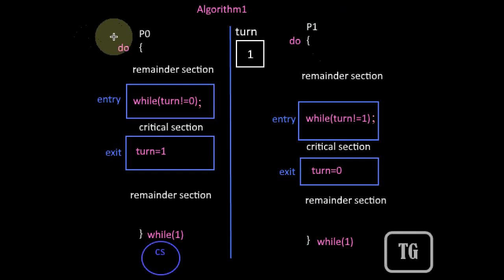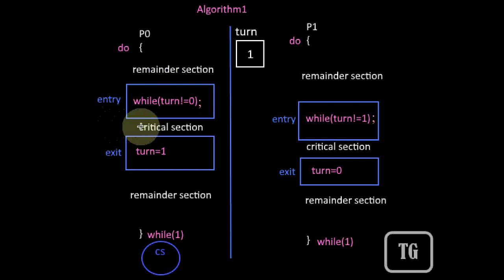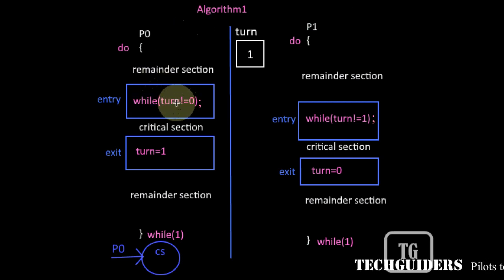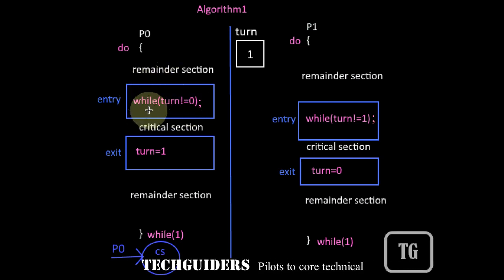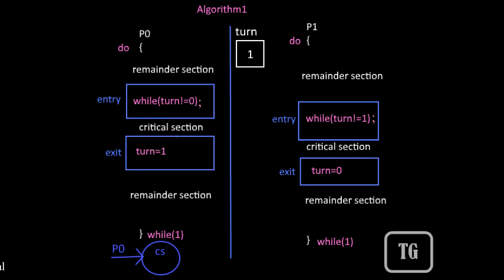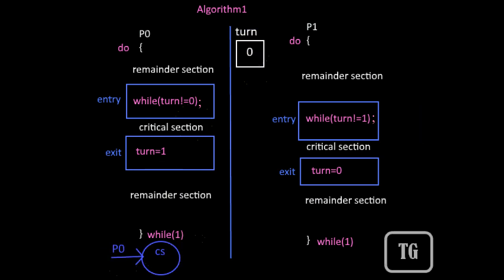The code works like this: P0, after completing its remainder section, if it wishes to enter the critical section, it will check the value of the global variable 'turn'. If the value is not 0, P0 will keep on waiting in the while loop without entering the critical section, and at any time when the value of turn becomes 0, P0 can enter the critical section.